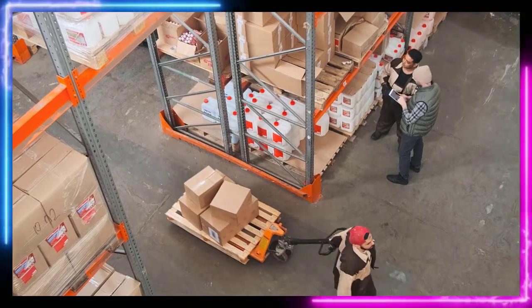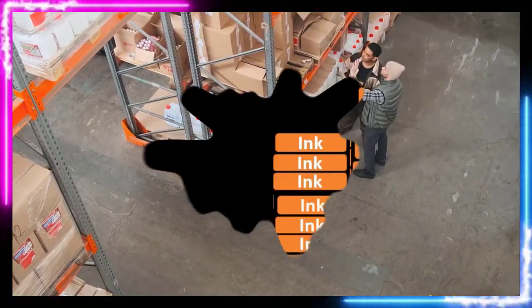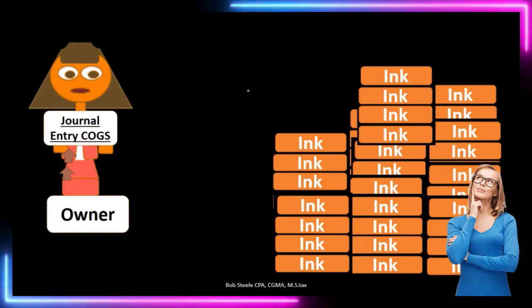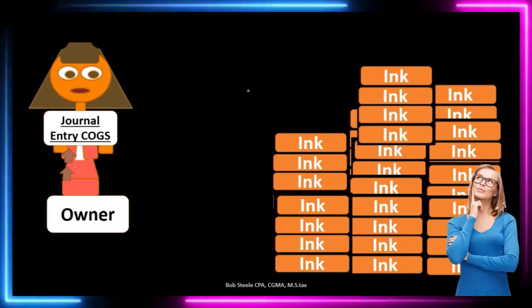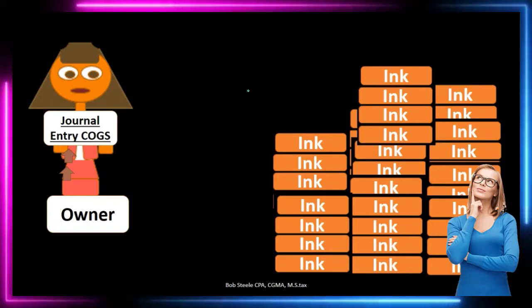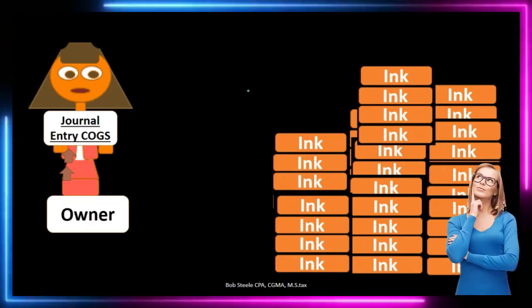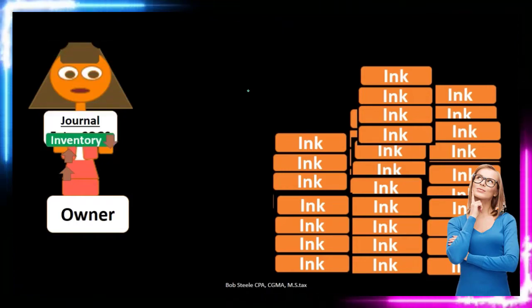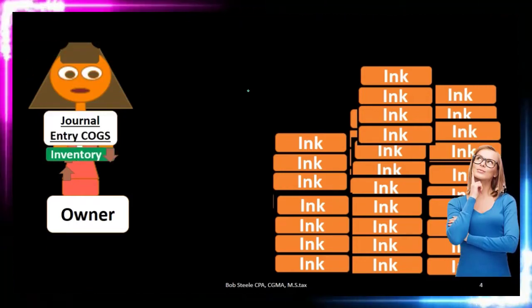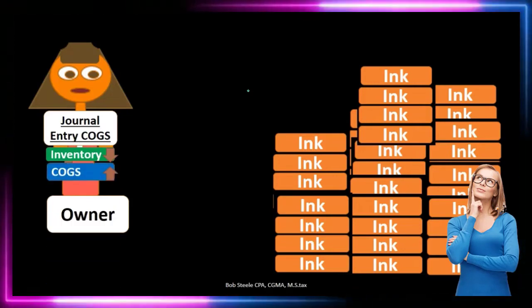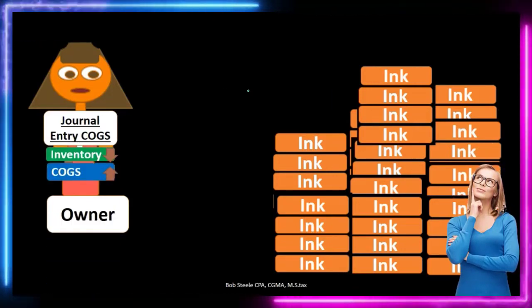At the end of that time period, we say: let's count the inventory that is left. We know what we've been doing — we have been recording purchases as we've been purchasing, but we have not been recording the reduction in inventory as we've been selling. Now we count the inventory and do the second half of the journal entry: a reduction of inventory to the physical count and an increase in cost of goods sold.